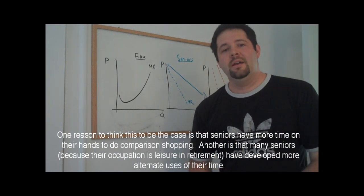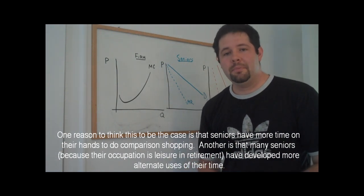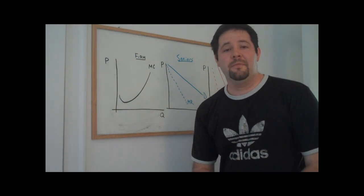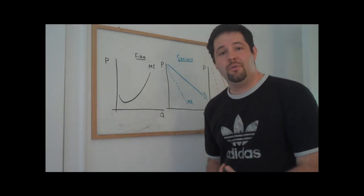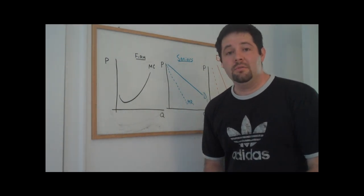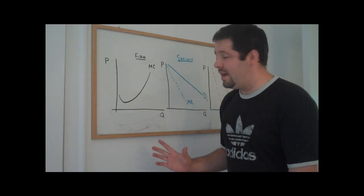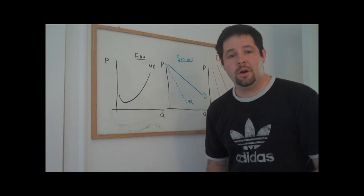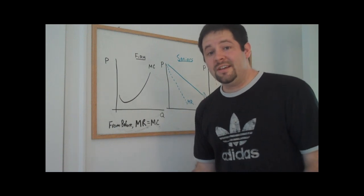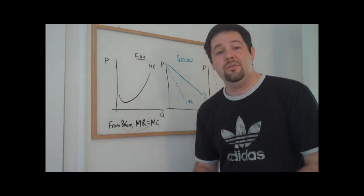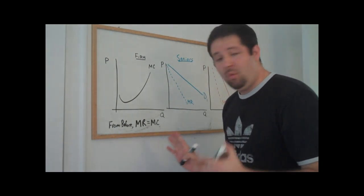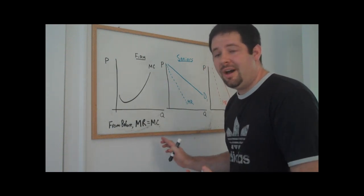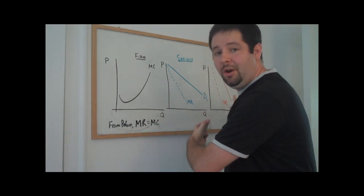If you remember back from the monopoly videos, what we talked about there was the optimal thing for the firm to do was to set marginal revenue equal to marginal cost, and that would actually maximize profit by the equi-marginal principle. It turns out that that's exactly what we're going to do in this setting, except we're going to set marginal revenue equal to marginal cost in every single market.